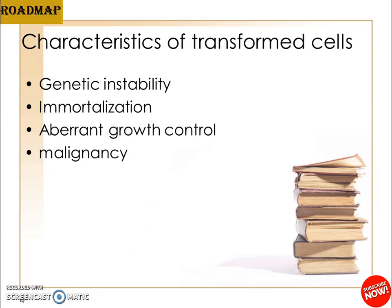Contact inhibition: transformed cells are characterized by loss of contact inhibition. This can be observed through morphological changes in disorganized monolayer cells, resulting in reduced density limitation of growth, which leads to higher saturation density compared to normal cells.